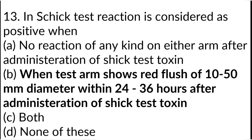In the Schick test, the reaction is considered positive when the test arm shows a red flush of 10 to 50 mm in diameter within 24 to 36 hours after administration of the Schick test toxin.